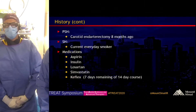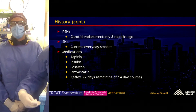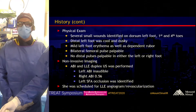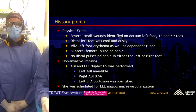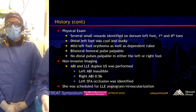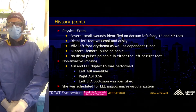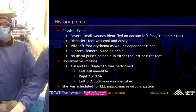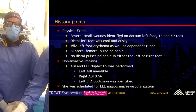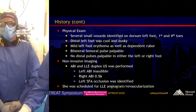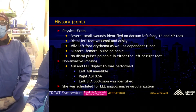Past surgical history: she had a carotid endarterectomy eight months ago. She's a current everyday smoker. On physical exam, she had several small wounds on the dorsum of the left foot and the left first and fourth toes, with no wounds on the right foot. Her distal left foot was cool and dusky, with mild left foot erythema and dependent rubor. Bilateral femoral pulses were palpable; distal pedal pulses were not palpable in either foot. The left ABI was inaudible, the right ABI was 0.56, and left lower extremity duplex showed a distal left SFA occlusion. She was scheduled for left lower extremity angiogram and revascularization.